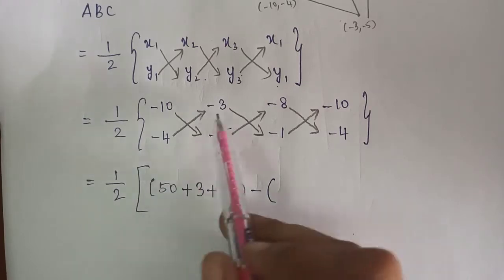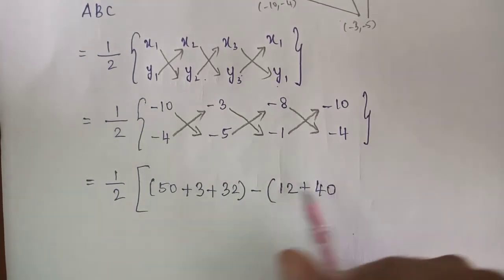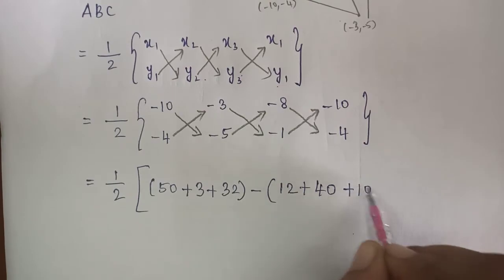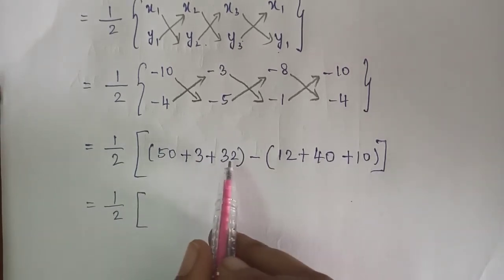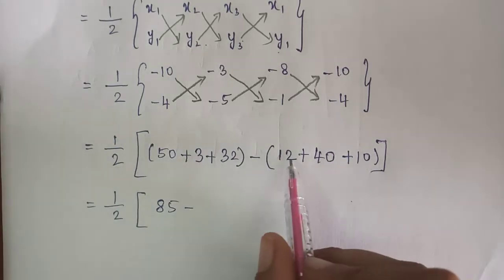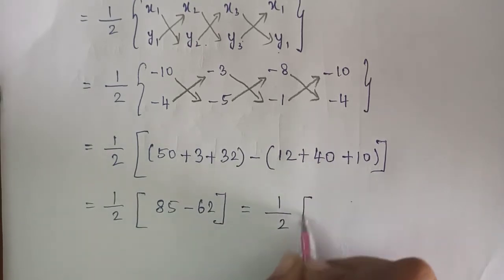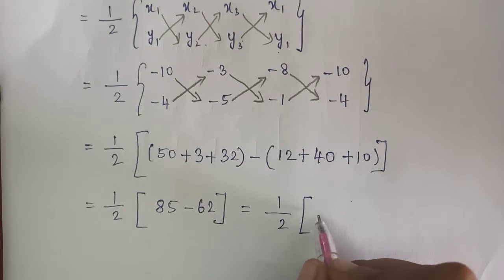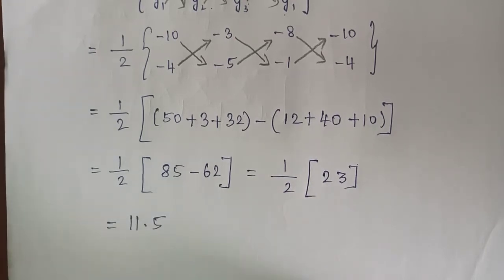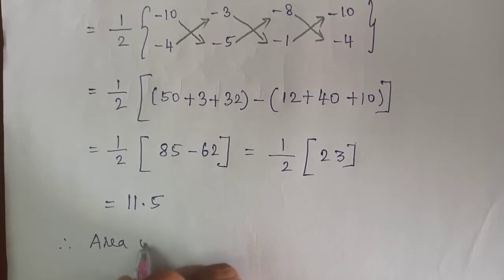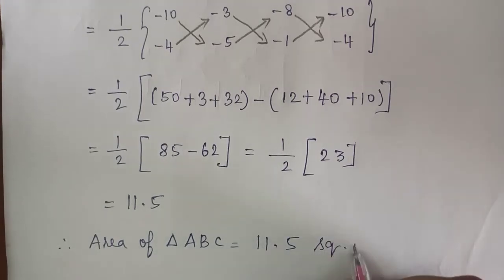Which gives: plus 50, plus 3, plus 32. Then minus direction: plus 12, plus 40, minus 10. So (1/2) into (50 + 3 + 32) minus (12 + 40 + 10) = (1/2) into (85 - 62) = (1/2) into 23 = 11.5. Therefore area of triangle ABC is equal to 11.5 square units.